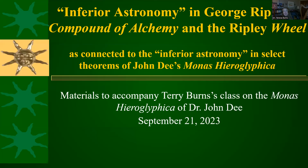Let me go ahead and jump in here. In theorem 13, Dee talked about inferior astronomy, and I said that the definition of that didn't seem to fit and that it was common in physical alchemy. That's what we're going to talk about here, and we're going to use as an example George Ripley's Compound of Alchemy and the Ripley Wheel in there.